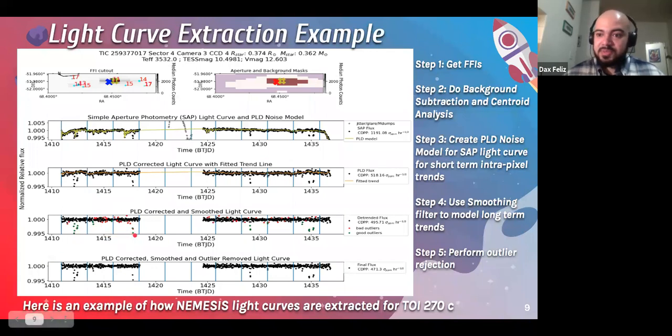And these are marked by green points. So again, this is a multi planet system. So we have many transits of different depths that are being kept by our rejection algorithm. And outliers that are removed are marked by red points, as you can see here, and this brings us to our final PLD corrected smooth and outlier removed light curve that we will use for transit detection.